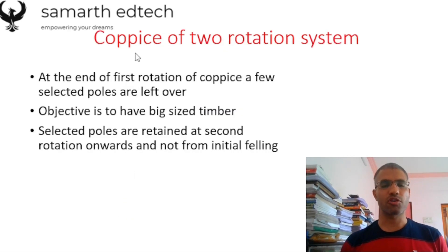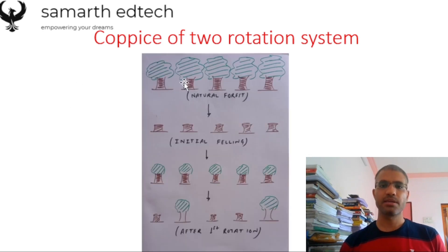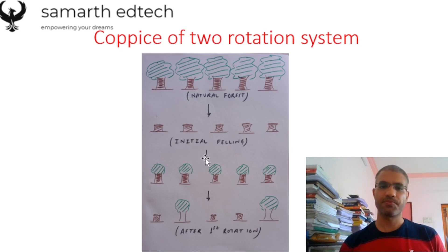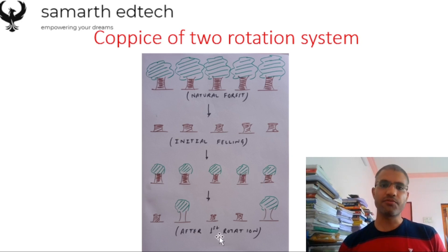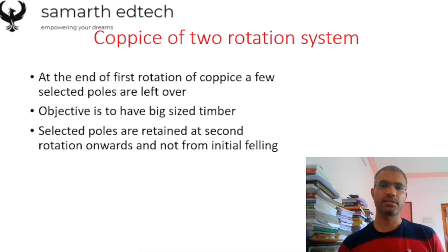The next subtype is the Coppice of Two Rotation System. At the end of the first rotation of coppice, a few selected poles are left over. In this system, at the initial stage there is a natural forest, then you do the initial felling — the entire forest is cut down and only coppices are left. After that, shoots start growing up and new trees come up from the coppices. At the end of the first rotation, you again cut down the trees but certain trees are left out.